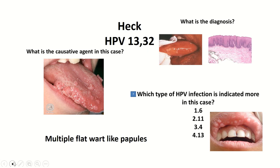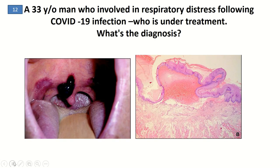Here are some examples of Heck's disease — in the clinical view, what you see is multiple flat wart-like papules. A 33-year-old man in respiratory distress following COVID-19 infection is under treatment. This respiratory distress indicates a patient receiving corticosteroid sprays, which results in a hemorrhagic bulla on the posterior of the oral cavity, as confirmed by histopathology.